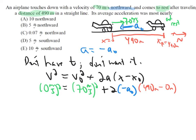All right, then we just solve for it. So we get that a_0 is going to be 70 meters per second squared over 2 times 490 meters.